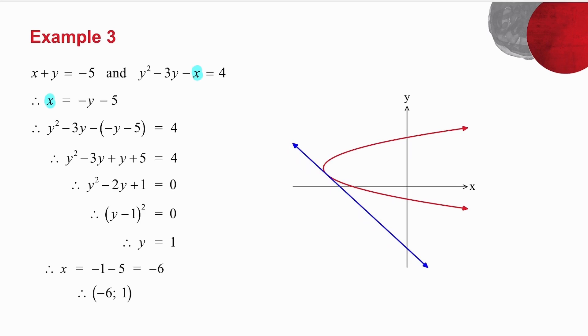This straight line graph looks like that. What do you notice about where the graphs cut each other? They only touch once. In other words, the straight line is a tangent to the parabola, which means you are only getting one solution.